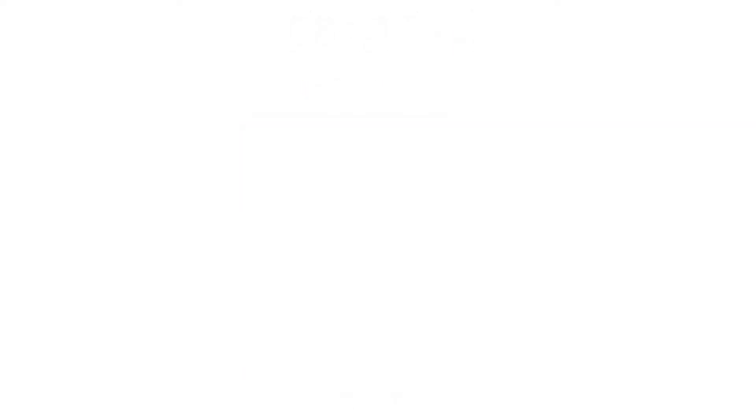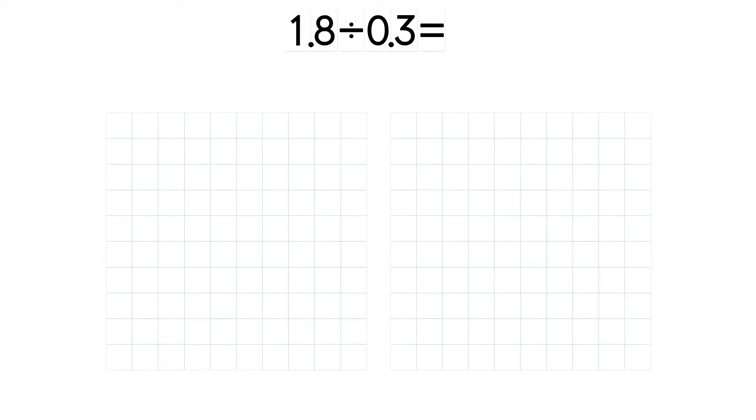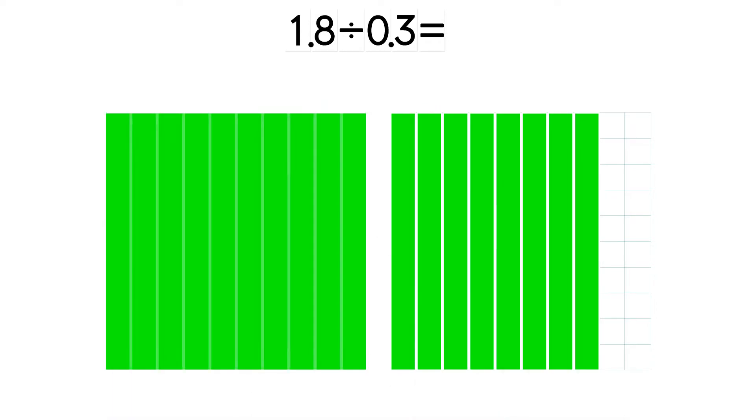Let's try another example. 1.8 divided by 0.3. 1.8 is the same as 1 whole and 8 tenths. We can regroup 1 whole as 10 tenths. So we have 18 tenths in all.